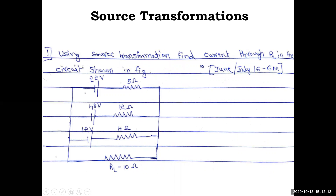This is the first problem: using source transformation, find the current through load resistance RL in the circuit shown. There are three batteries connected in parallel, each in series with respective resistances of 5 ohm, 12 ohm, and 4 ohm. This complete circuitry is in parallel with load resistance RL which equals 10 ohm. This was a question asked in previous exam papers.